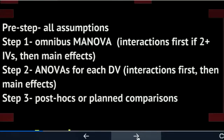You're going to have one Wilks-Lambda, and that's it — there's nothing else here. But if you have a two-way or a three-way MANOVA, then you're going to need to look at your interactions first and then look at your main effects. You'll have multiple MANOVA results if you have a two-way or three-way type of MANOVA or higher.